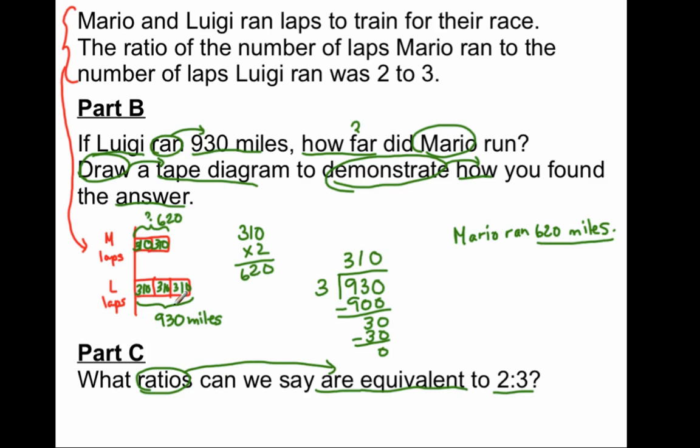I can also say that Mario to Luigi is 620 to 930. Remember, ratio is just an ordered pair of non-negative numbers that tell you the relationship between two quantities in a particular order. So, this one is Mario to Luigi, 2 to 3. And in this case, the equivalent ratio through the tape diagram is 620 to 930, in the same order. Not changing the order, but in the same order.